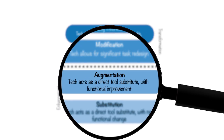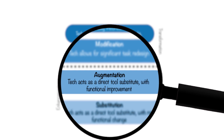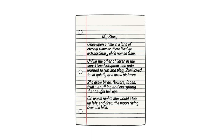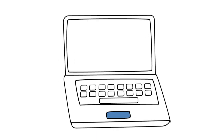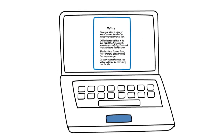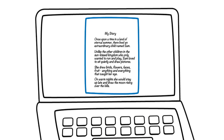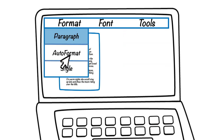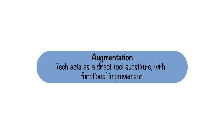In augmentation, technology still substitutes, but with some functional improvement. What if you took the same creative writing assignment and had students use a word processing program? They could use features such as spell check and tools for formatting. Again, the story writing task is the same, but the technology augments it with enhanced productivity.